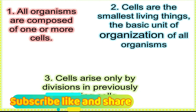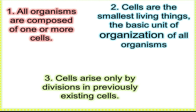The cell theory was initially presented by Schleiden and Schwann, and later elaborated upon by Virchow. The cell theory has three main principles. The first principle is that all organisms are composed of one or more cells. The second principle is that the cell is the basic unit of life — the smallest living unit. The third principle is that all cells arise from pre-existing cells.